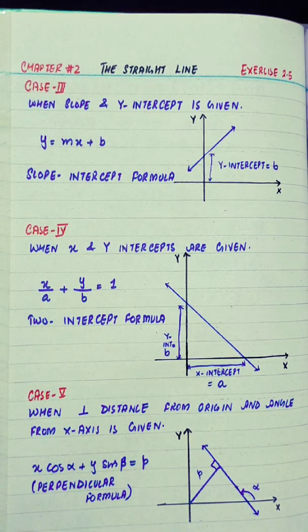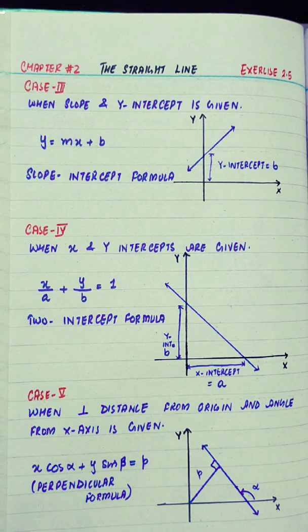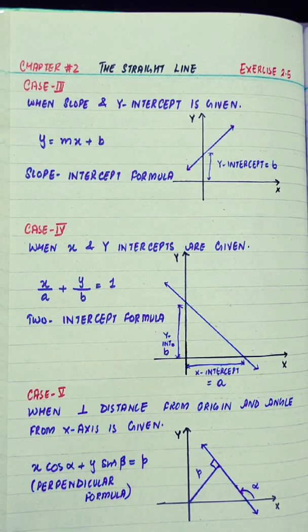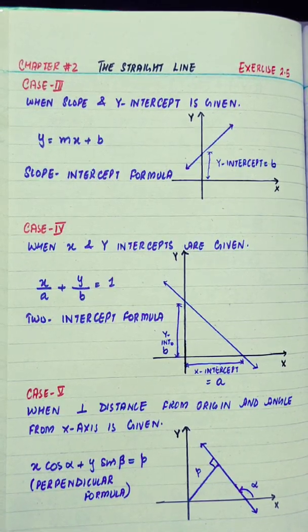Case 4 is when x and y intercepts are given, then we use x over a plus y over b equals 1. This formula is also known as the two-intercept formula.